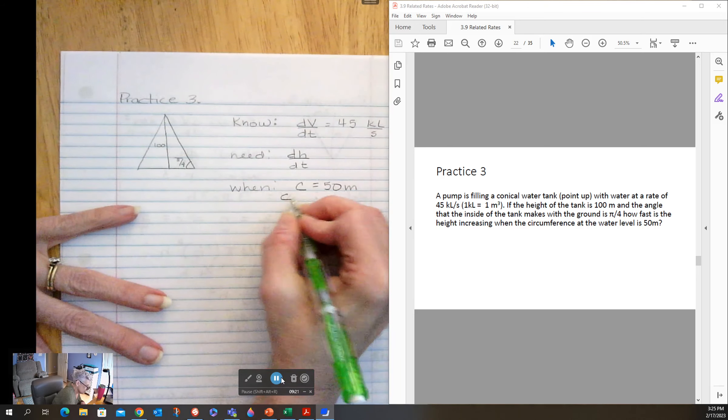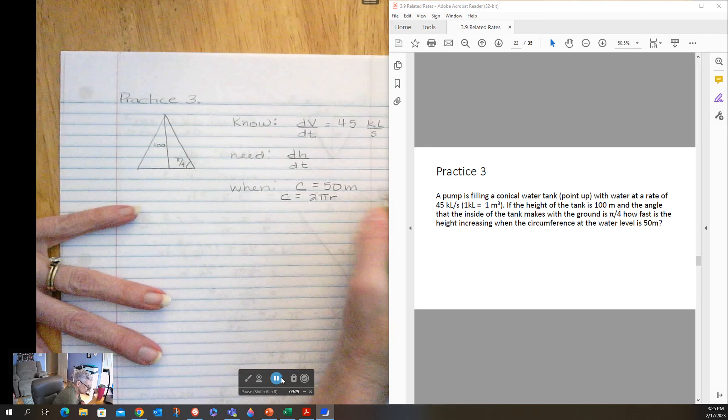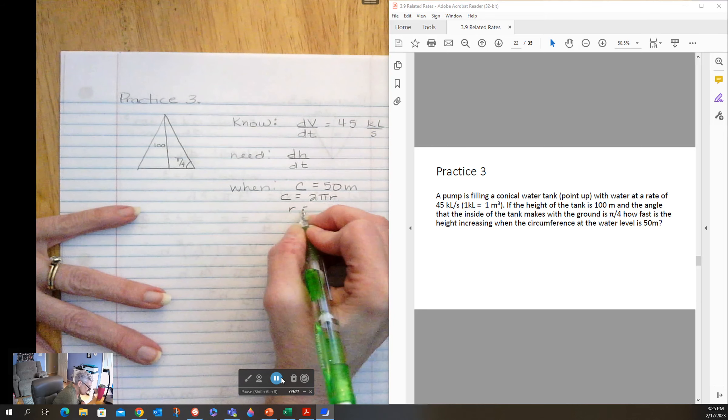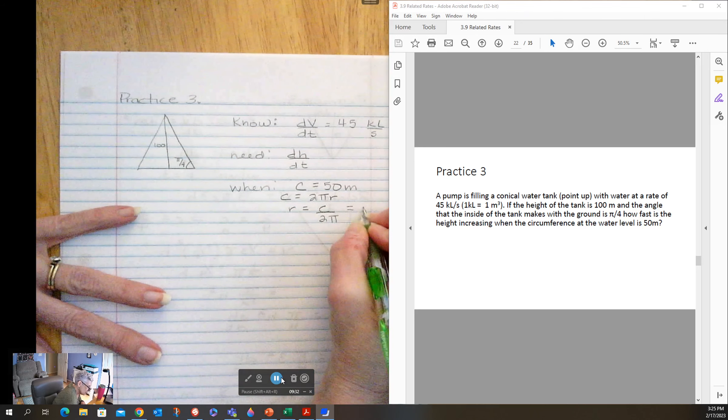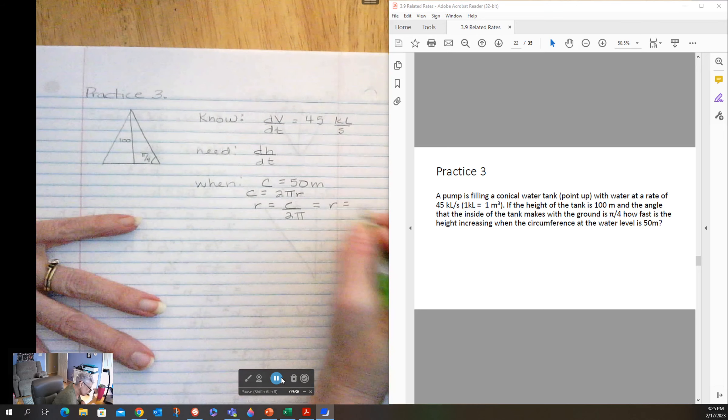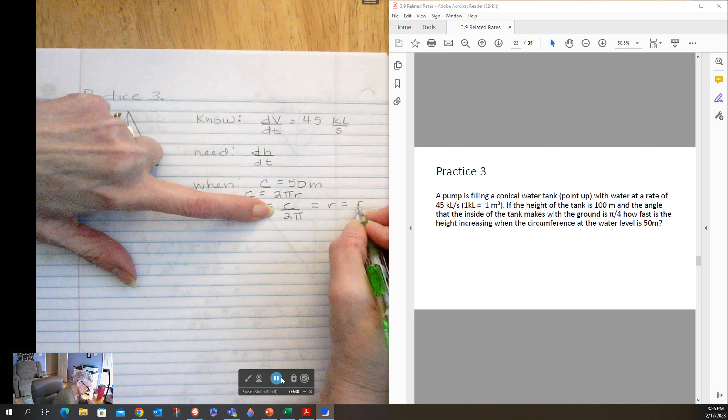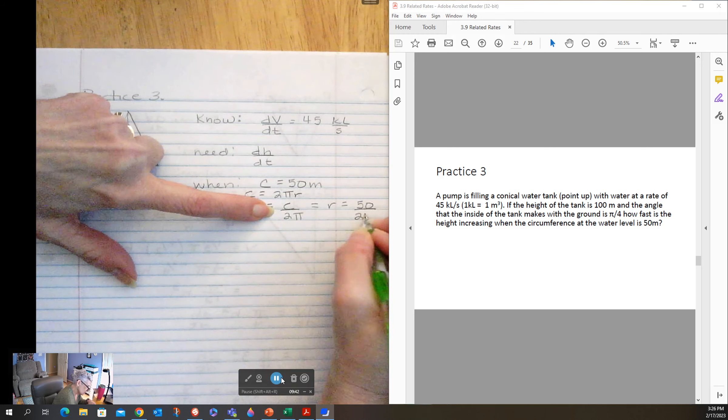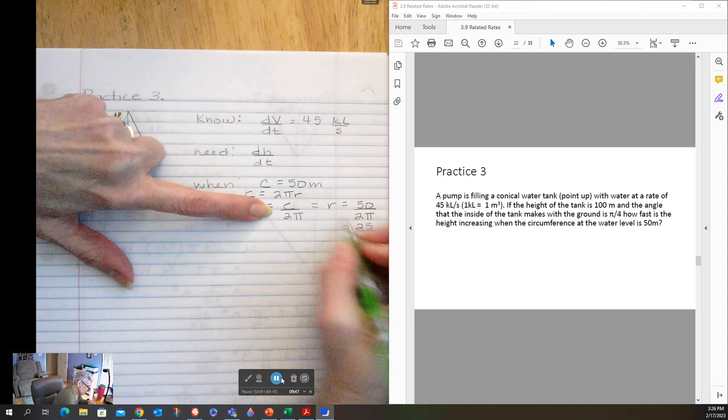Well, I know that circumference is 2 pi times the radius. So radius equals circumference over 2 pi. So my win is really when the radius is equal to 50 over 2 pi, or even better, just 25 over pi.